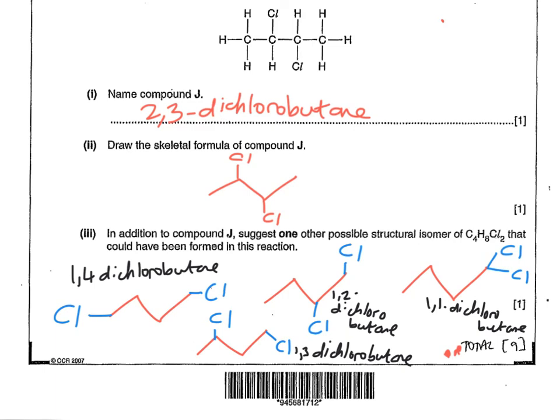And we've got four possibilities. We've got 1,4-dichlorobutane, 1,2-dichlorobutane, 1,3-dichlorobutane, and 1,1-dichlorobutane. All it involves is choosing one and putting the skeletal formula in. Don't worry about having to put the names in. I just did that for illustrative purposes.